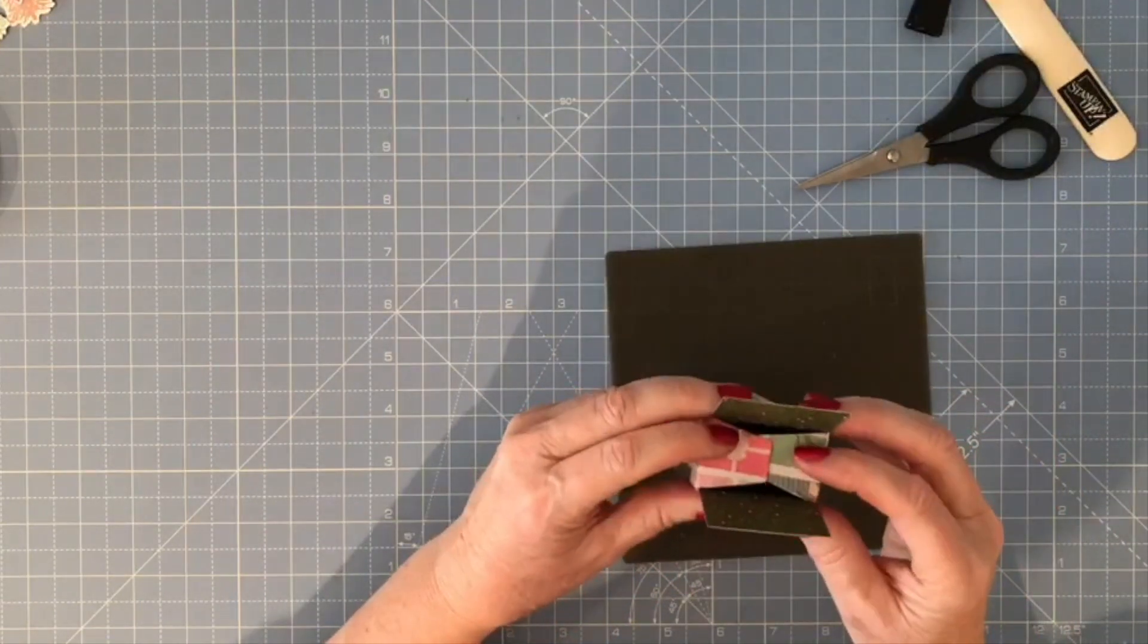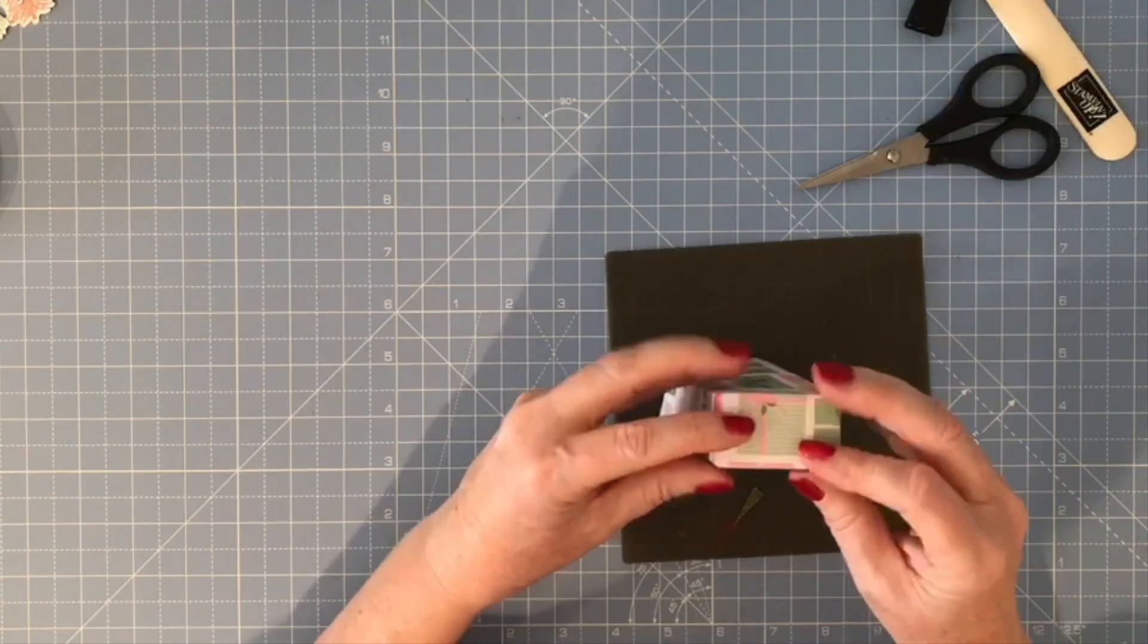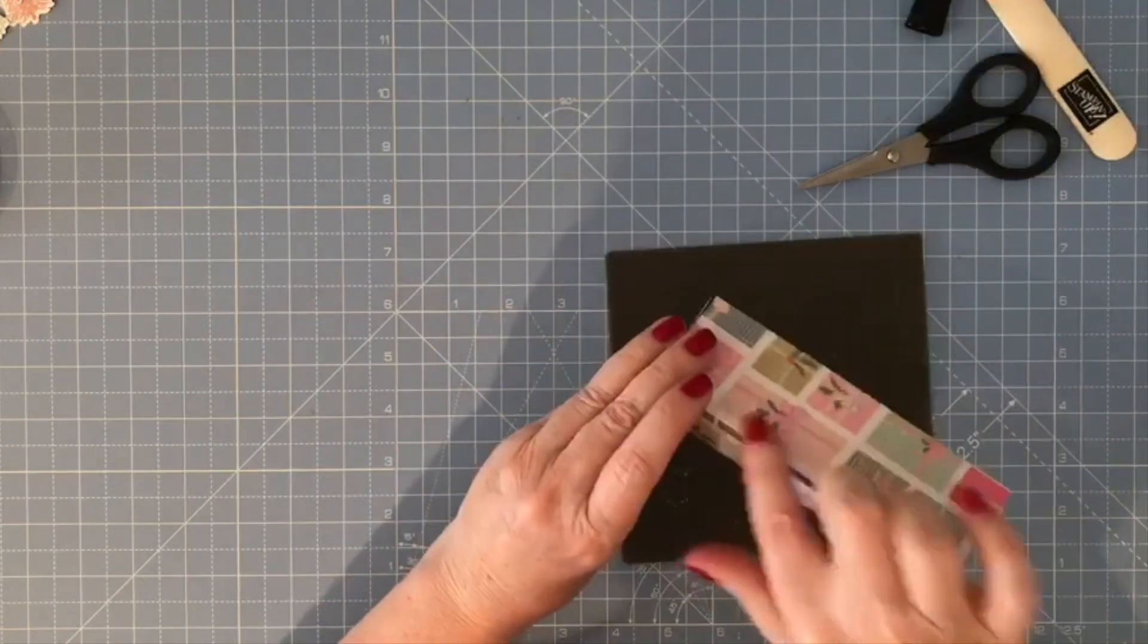I'm going to fold in the two flaps that are mitered, fold in this and then fold that over so that it's got a nice clean look as this is the back.